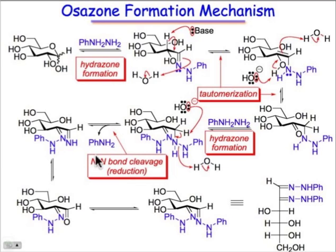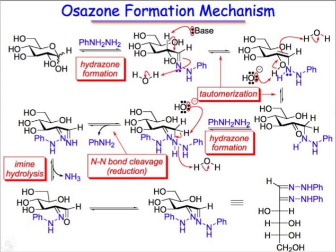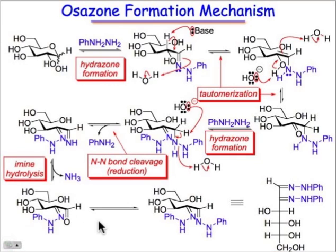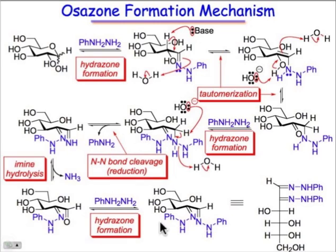At that point, we now have the possibility of making a molecule of ammonia. That happens by hydrolysis of the carbon-nitrogen bond at position one. We basically have an imine functional group which loses ammonia and makes a new carbonyl at position one. That carbonyl can then form a hydrazone with another equivalent of phenylhydrazine, and hydrazone formation at carbon one concludes the reaction mechanism, generating the osazone of glucose.